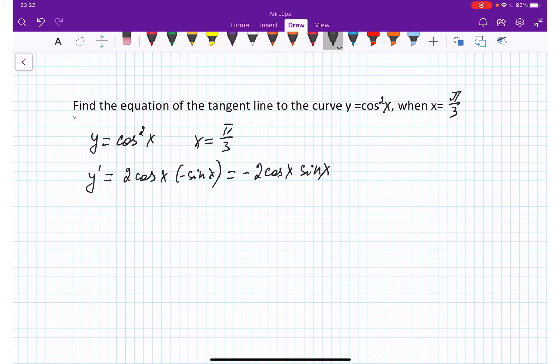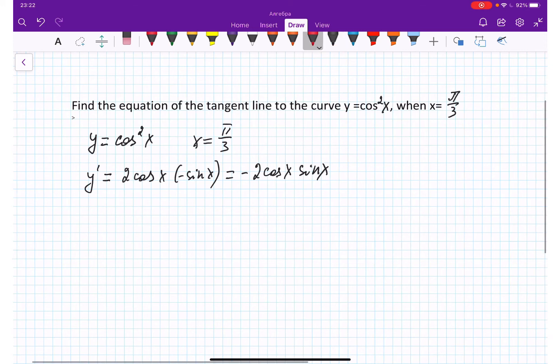Based on the rule of double angle, with the formula of double angle, sine 2 alpha equals 2 sine alpha times cosine alpha. So from here we can say our y prime equals negative sine 2x.